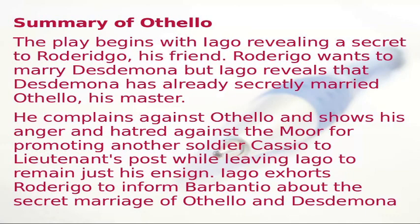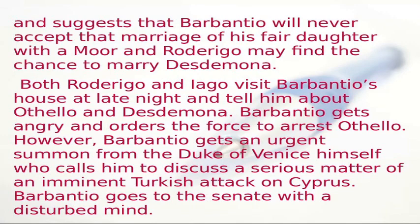Now let us discuss the summary of Othello. The play begins with Iago revealing a secret to his friend Rodrigo — that Desdemona has already secretly married Othello, his master. Iago complains about Othello promoting Casio to the lieutenant's post while leaving Iago as mere ensign. Iago urges Rodrigo to inform Barbanteo about the secret marriage, suggesting Barbanteo will never accept his daughter's marriage with a Moor. Both visit Barbanteo's house at night; Barbanteo gets angry and orders the arrest of Othello.